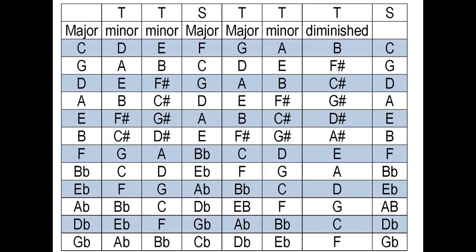That works for all the scales going down — you can figure out what notes belong to each scale. The second row is the chord type: major, minor, minor, major, major, minor, diminished.